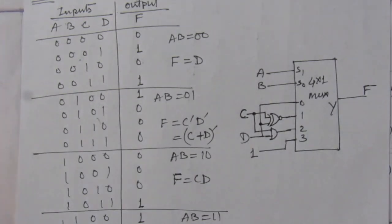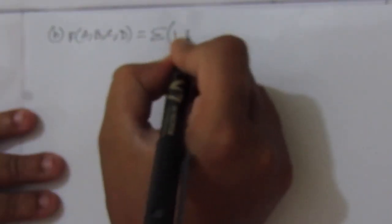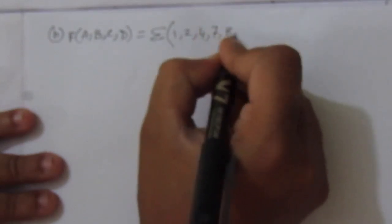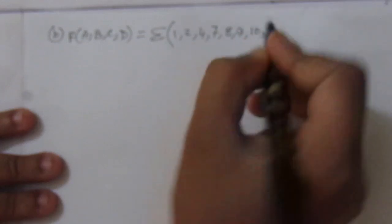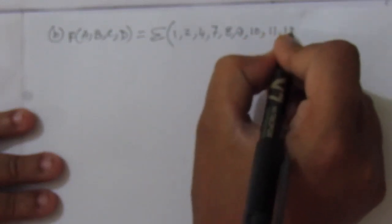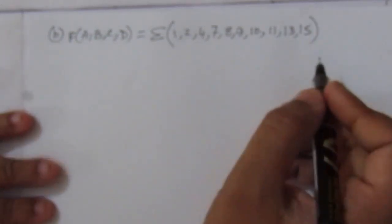Now let us go to the second part of the problem. In the second part, we have F(A, B, C, D) equal to sum of minterms 1, 2, 4, 7, 8, 9, 10, 11, 13, and 15. This is the given function.